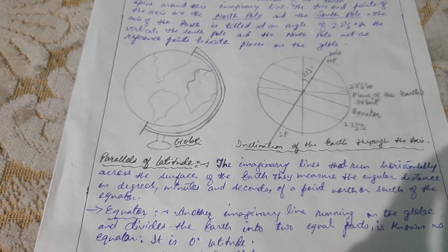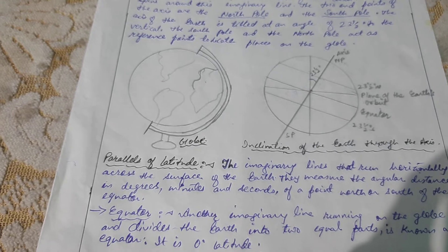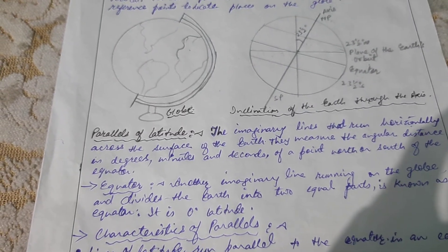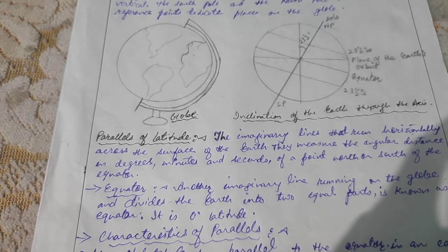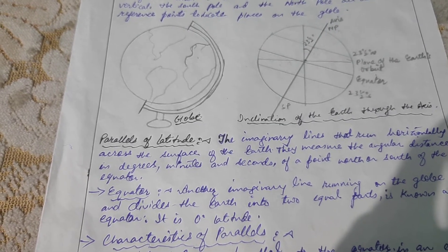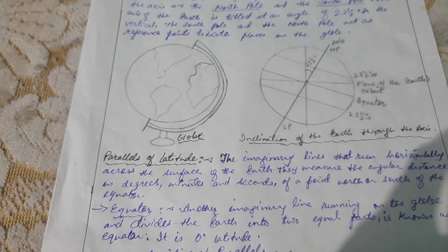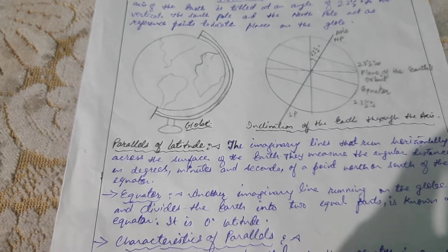The equator divides the Earth into northern and southern hemisphere. All the parallels to the north of the equator are called north latitude. Similarly, all the parallels to the south of the equator are called south latitude.